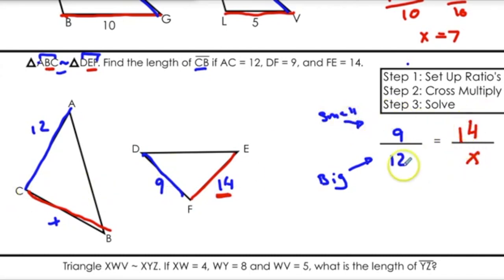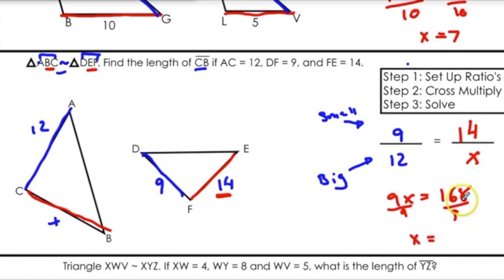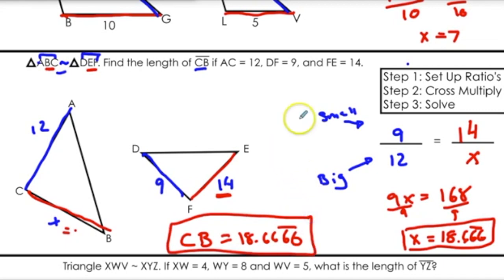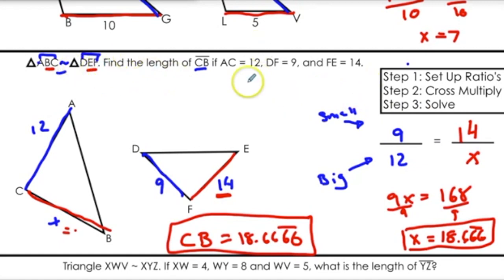Cross multiply: 9X equals 12 times 14, which is 168. Divide both sides by 9. Using the calculator, X equals 18.666 repeating — we'll put a bar over the last digit. CB equals 18.6̄. The hardest part is figuring out how to set up your ratios correctly. Remember: the same triangle always has to go on top or bottom consistently, and you have to figure out the corresponding sides. If you do that, you'll be good in this lesson.